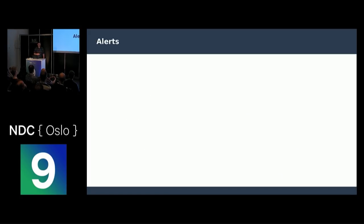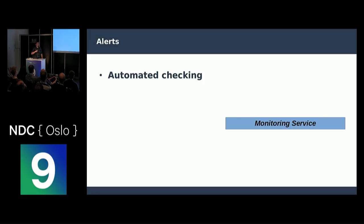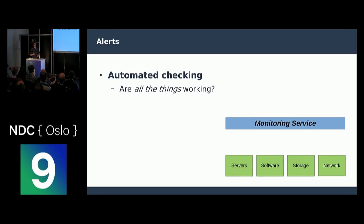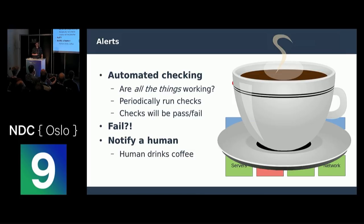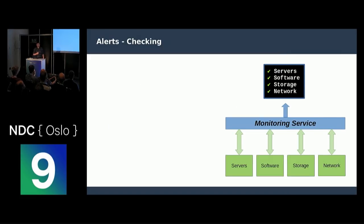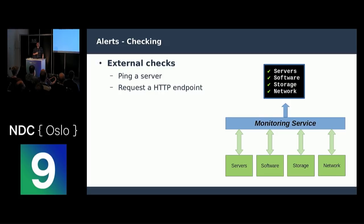Alerts are essentially an automated checking service. You have some service that is constantly checking whether all your things are working by periodically running these checks, and it's going to alert you when things go wrong. If something does fail, the intention is that we notify some sort of human. The human will drink coffee and hopefully fix what is broken. These could be external checks — we ping a server, try to get an HTTP endpoint, something like that.